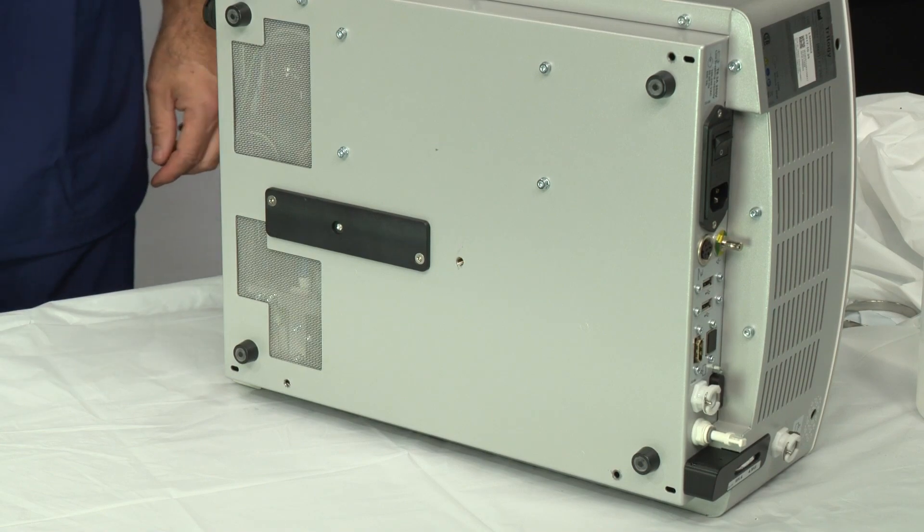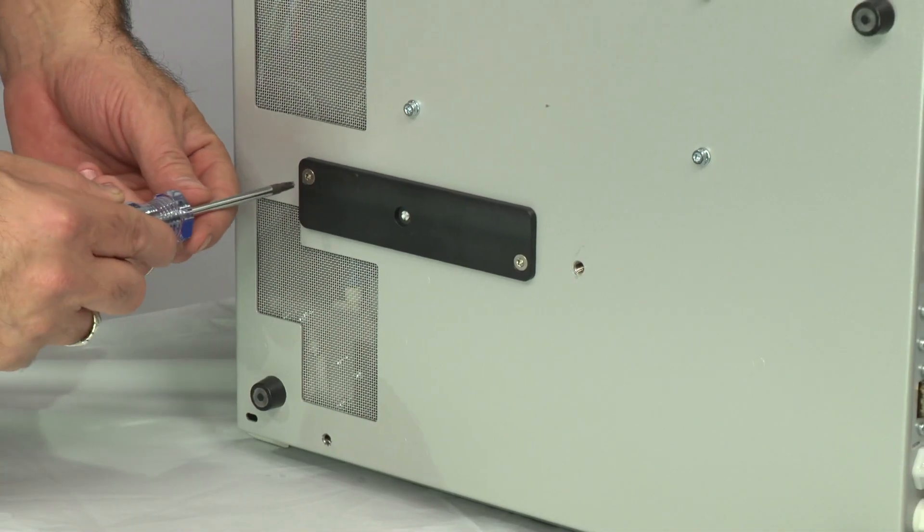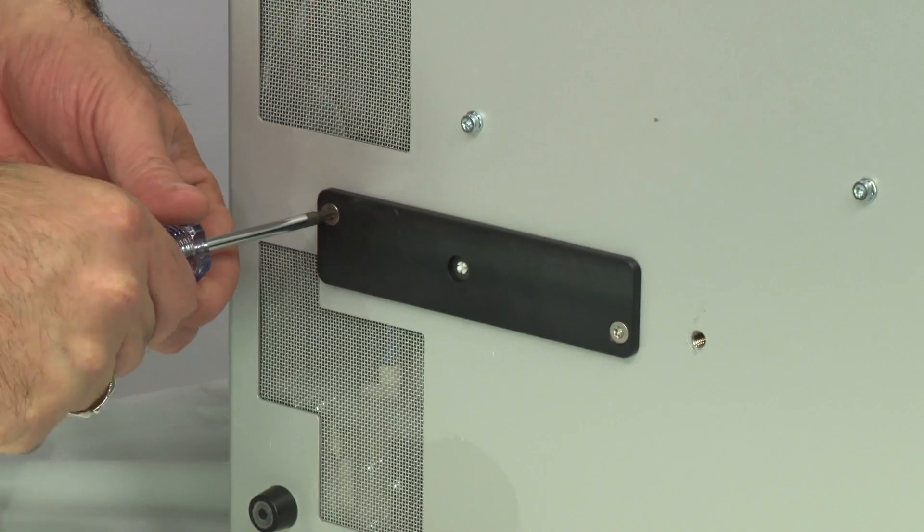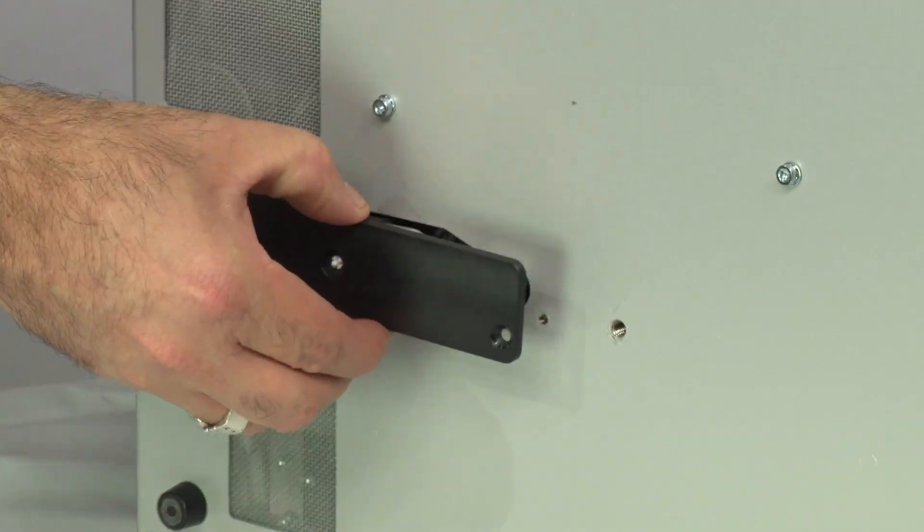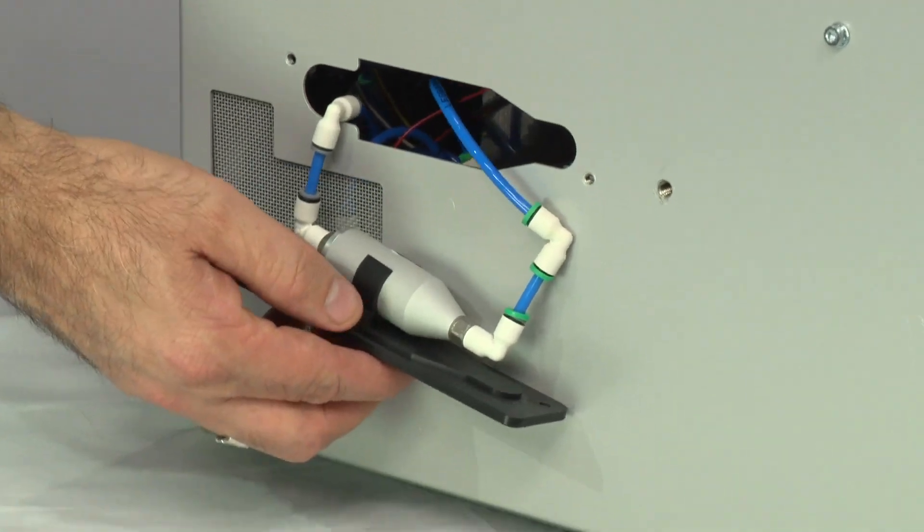Place the console flat on its side. Use the Torx tool size 20 to remove the water filter cover. Carefully remove the cover and water filter from inside the Trilogy console.